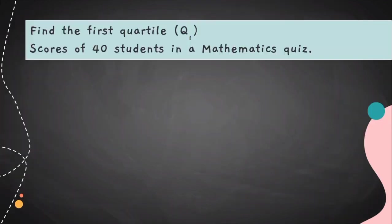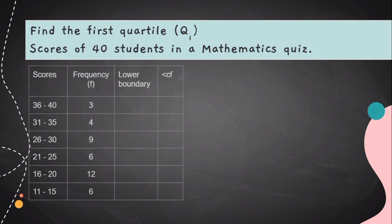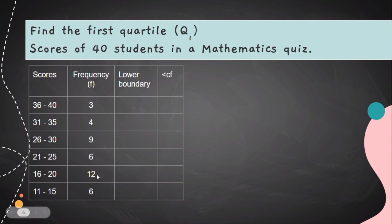In Example 1, find the first quartile score of 40 students in a mathematics class. The score and frequency are already given in the table. To find the total frequency, add all the frequency values: 3, 4, 9, 6, 12, 6, which equals 40.